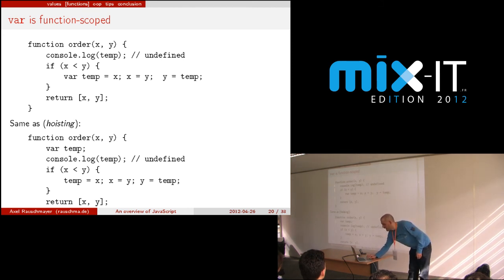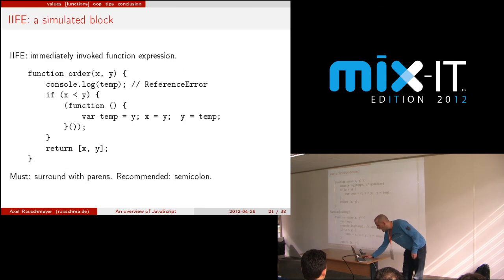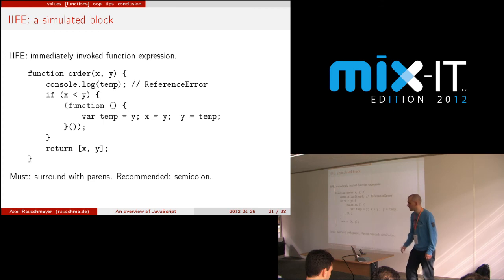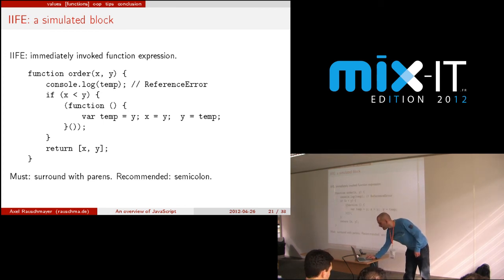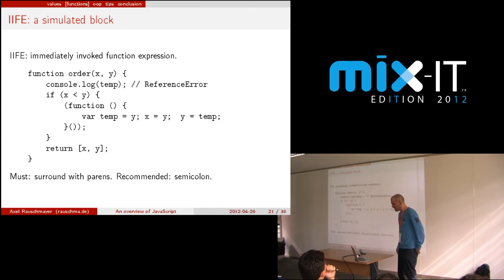For example, what's the result of an empty string OR something? The empty string is falsy, so you get the other value. An empty object — what is it going to be? The object of course, because any kind of object is truthy. So if opt1 has a value you use that one, otherwise use the default.